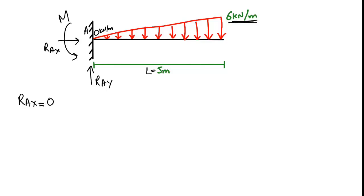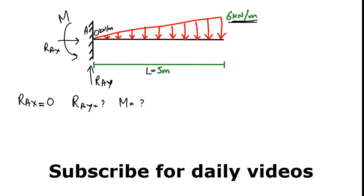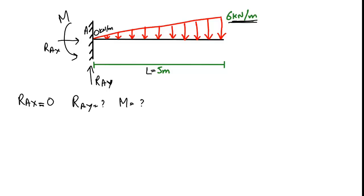In our case, R_x is equal to 0 because there is no horizontal load acting on the beam. There are only two unknowns: the vertical reaction R_ay and the moment M. To find these, for a triangular load acting on the beam, the easy method is to find the area of the triangle.